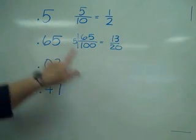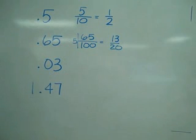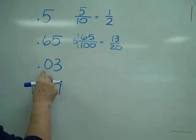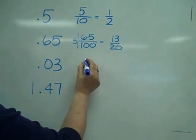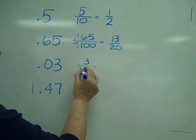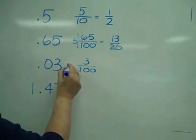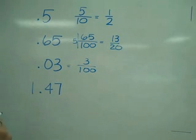This one's a nice one because 3 hundredths, there's nothing that goes into 3 and 100, so I am done. 3 hundredths equals 3 hundredths.